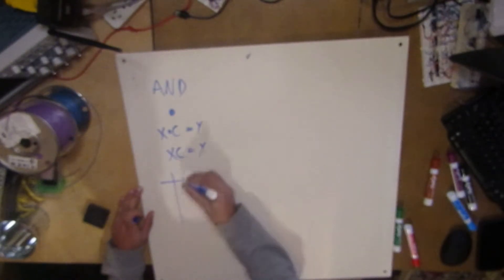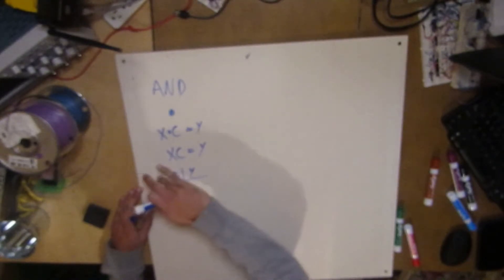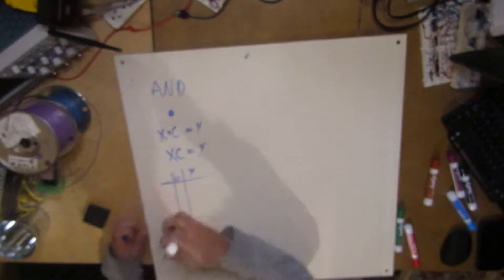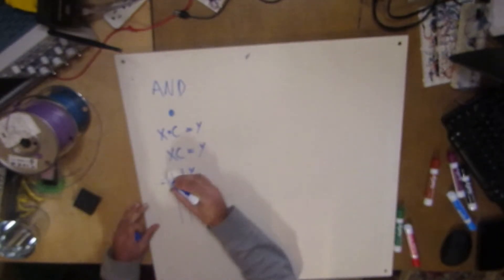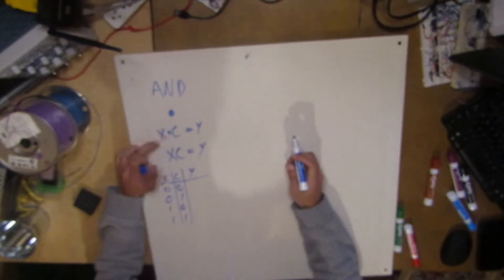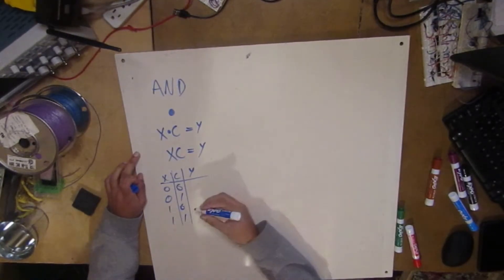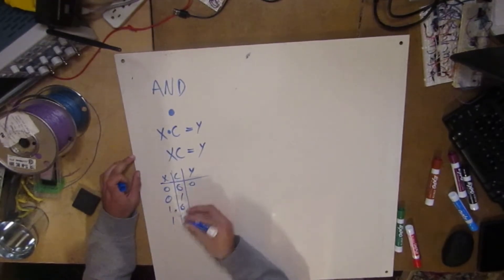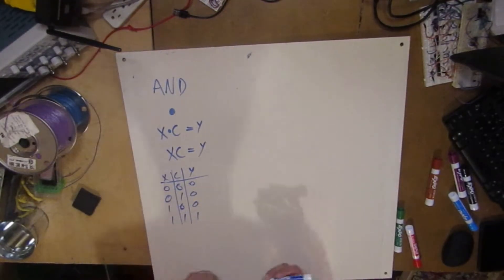Let's just look at the truth table really quickly. Let's do x, c, and y. So if you compare this to regular math that we know, this kind of looks like multiplication, right? You have x c equals y — this looks like multiplication. And there's a reason for that, because 0 times 0 is 0, 0 times 1 is 0, 1 times 0 is 0, and 1 times 1 is 1.